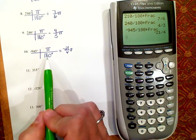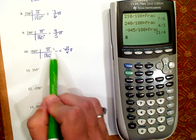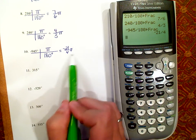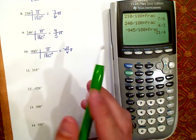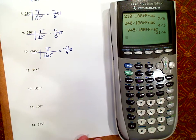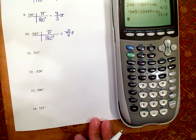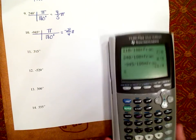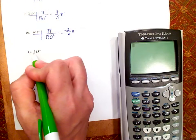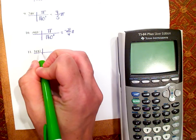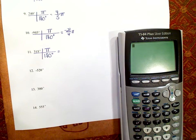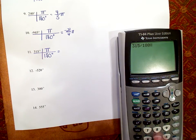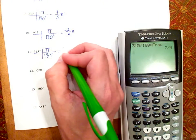Notice that on all of these, when I plug that in, I do not put pi in the calculator — I want my answer to be a multiple of pi, so do not plug pi into the calculator. We want the exact answer. So for number 11, degrees on top, degrees on the bottom, pi over 180 is our conversion. 315 divided by 180, math, enter, enter — is 7 over 4 pi.